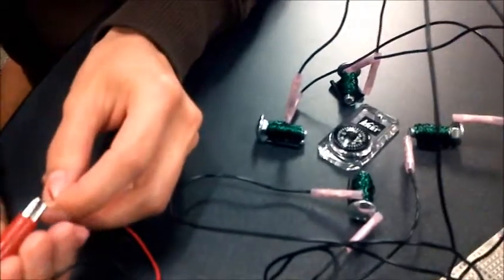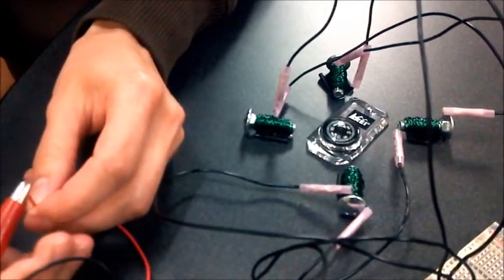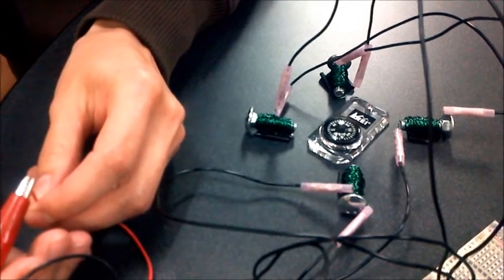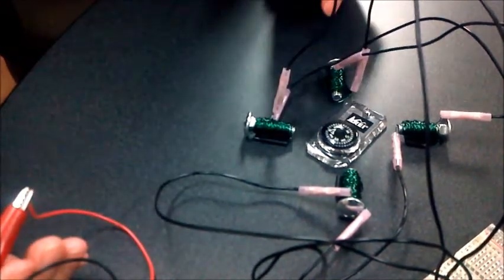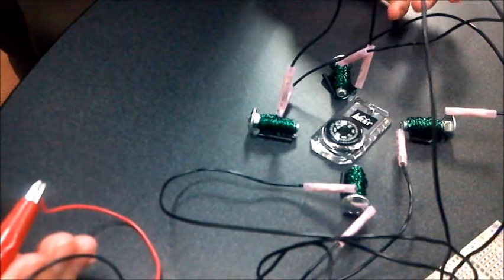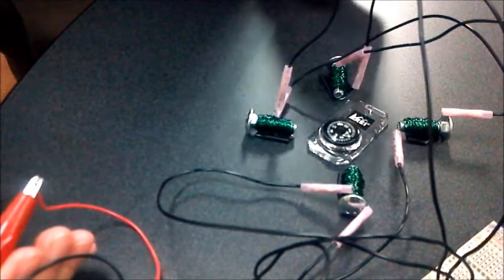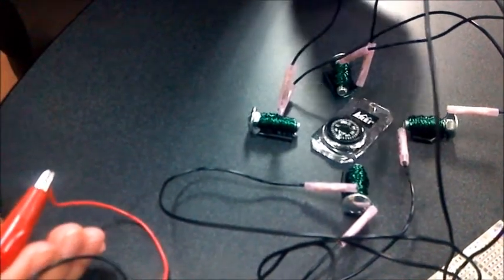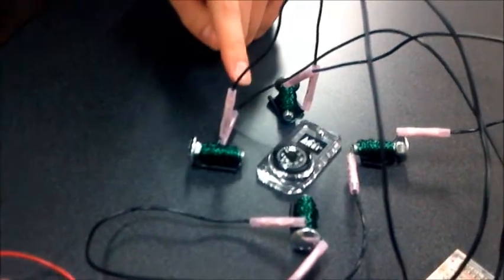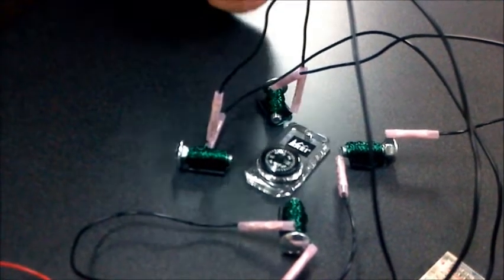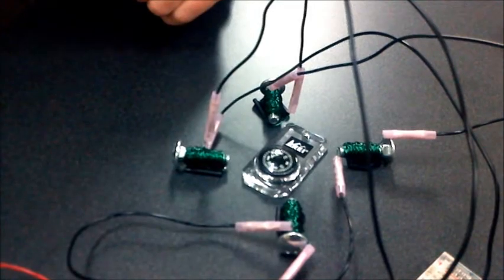So now we've increased the distance between the compass and each of the solenoids. So when I hook it up, it runs slower due to the Biot-Savart Law explained earlier. The magnetic field has decreased because the distance has increased and the magnetic field is inversely proportional to the square of the distance.